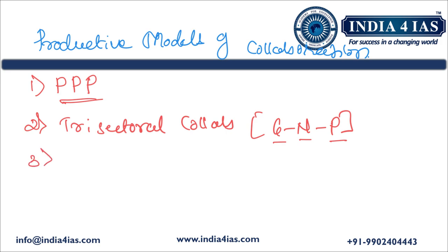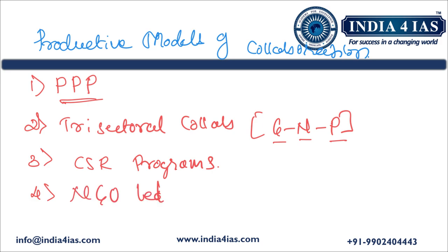Third is Corporate Social Responsibility (CSR) programs — the private sector and NGOs collaborate to ensure social welfare programs reach the needy, contributing to socio-economic development. Funding is done by corporates and implementation by NGOs and civil societies. Examples: Tata Trust and Infosys Foundation working on education, healthcare, and rural development in collaboration with local NGOs and government initiatives. Fourth is NGO-led development with government and private sector support — NGOs take the lead in designing and implementing programs, while government and private sector provide financial and logistical support. Example: Self-Employed Women's Association (SEWA).